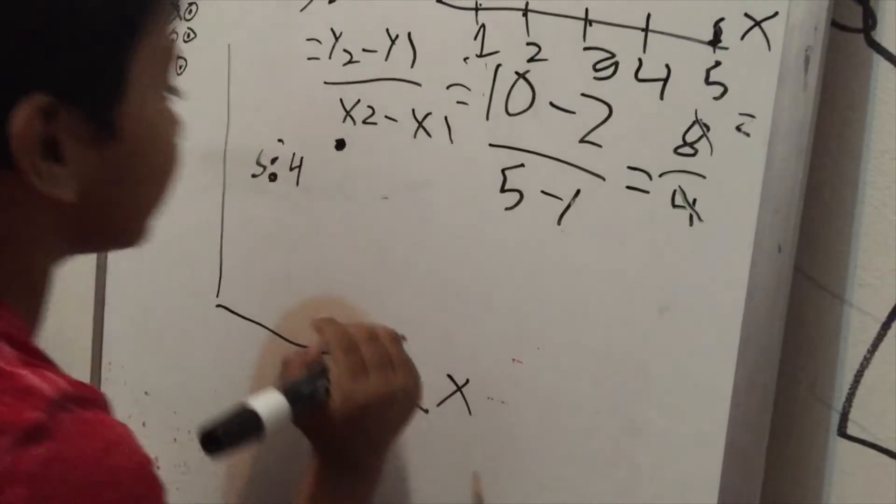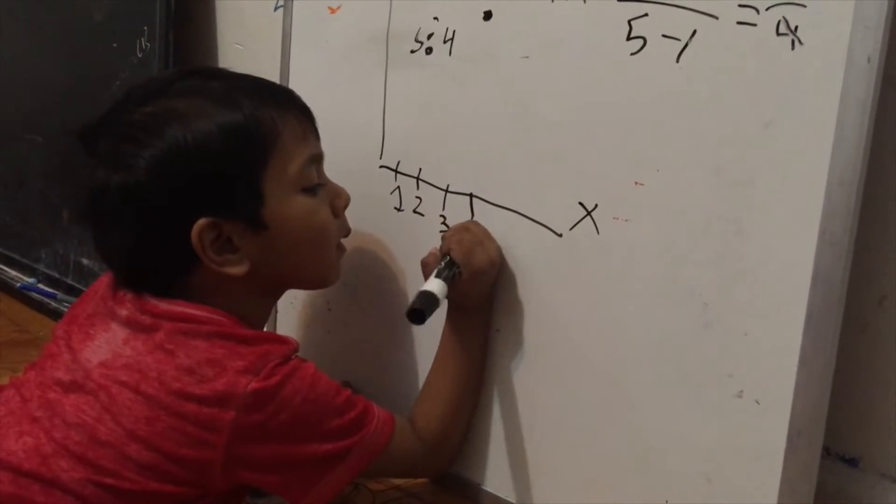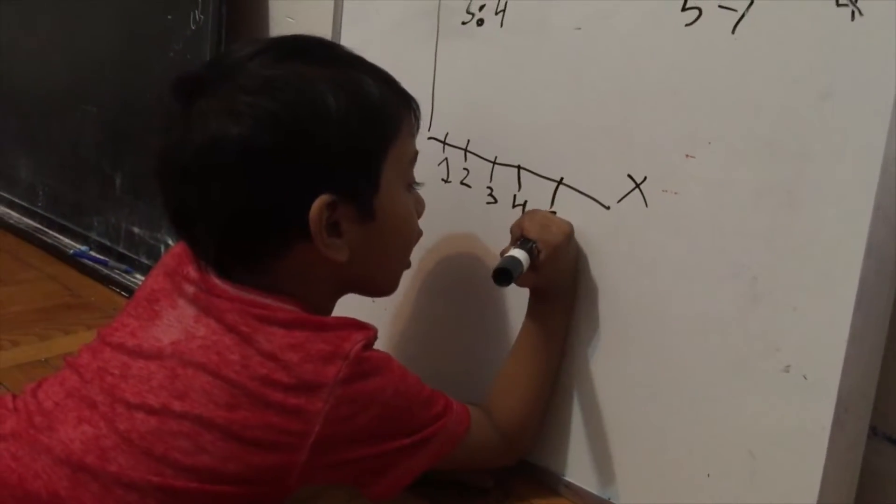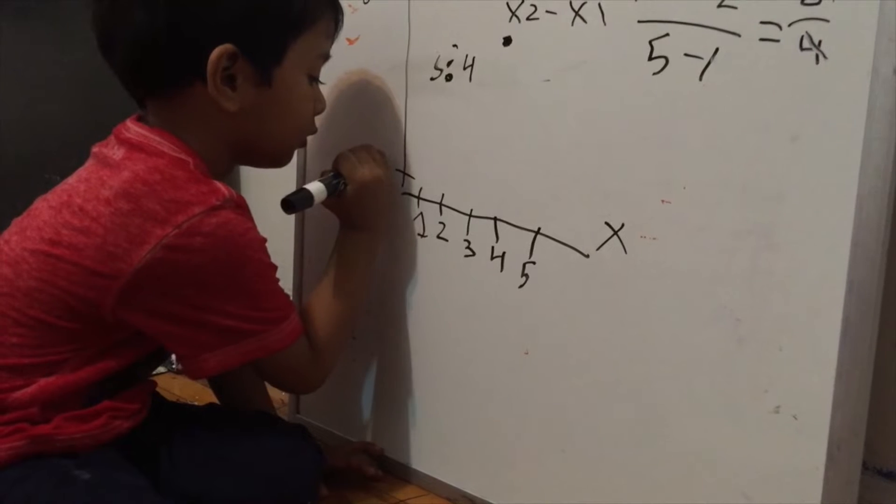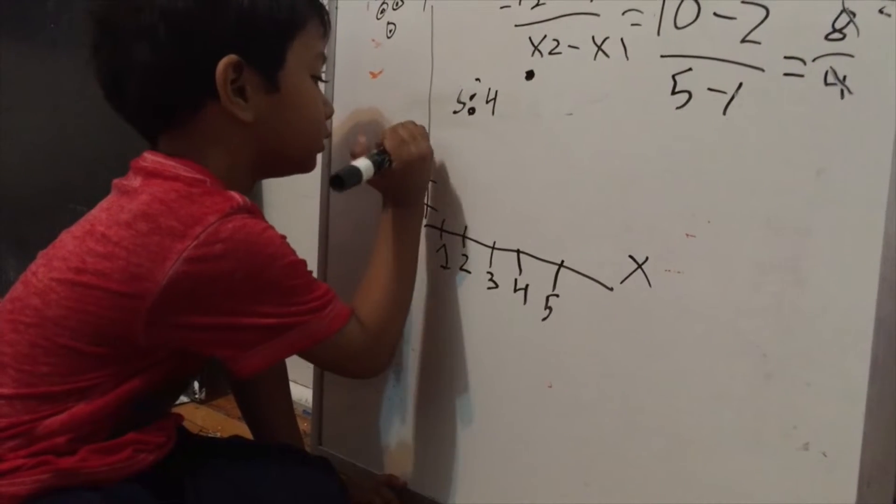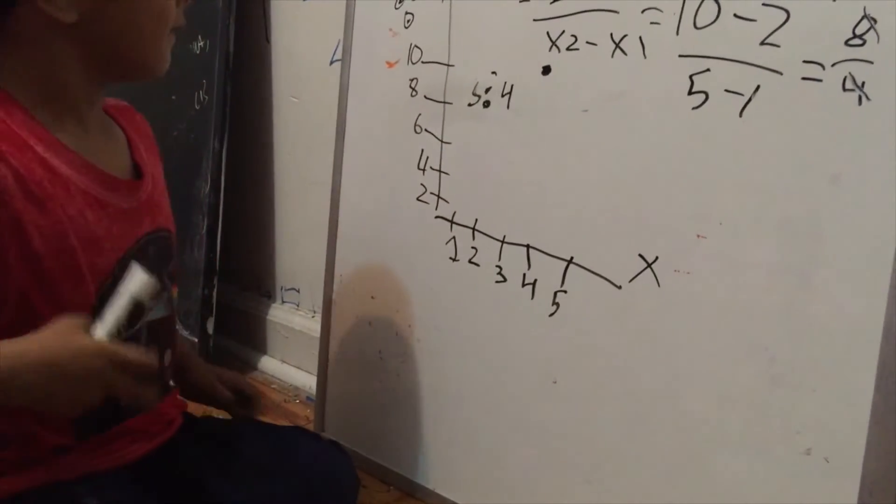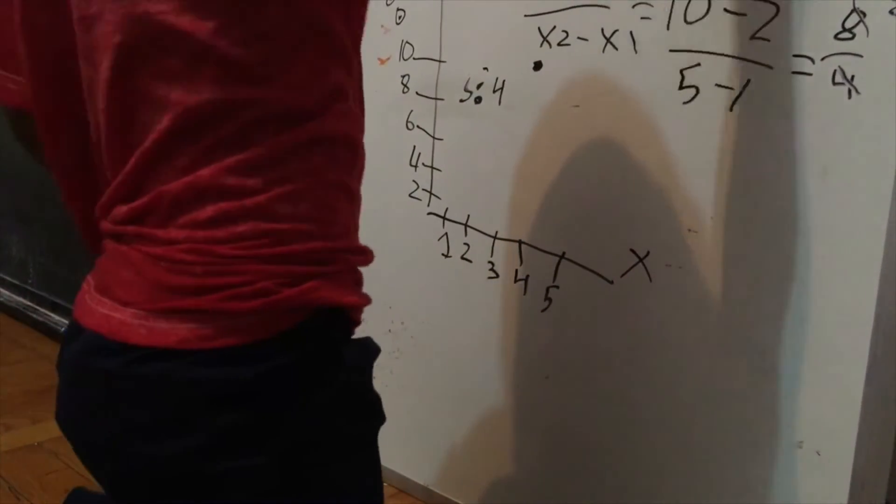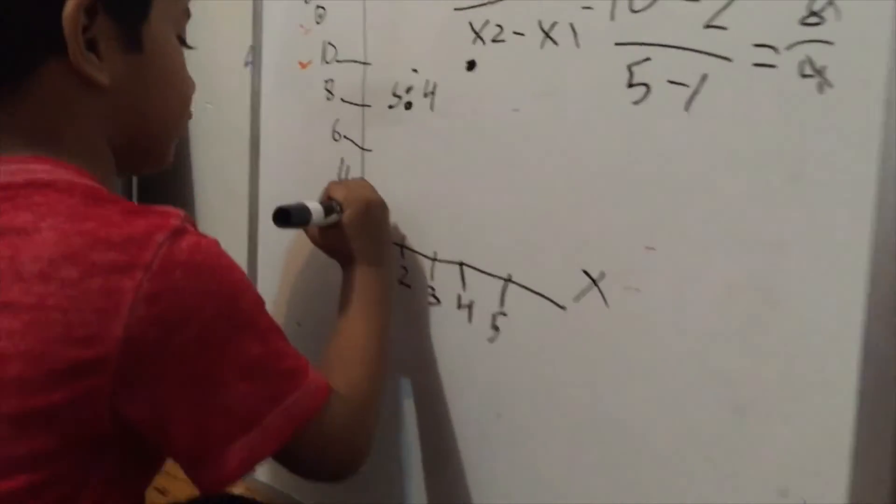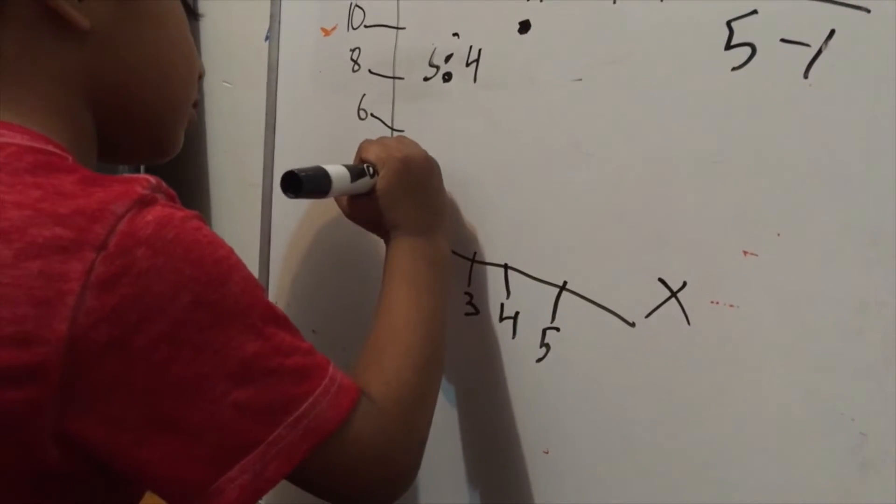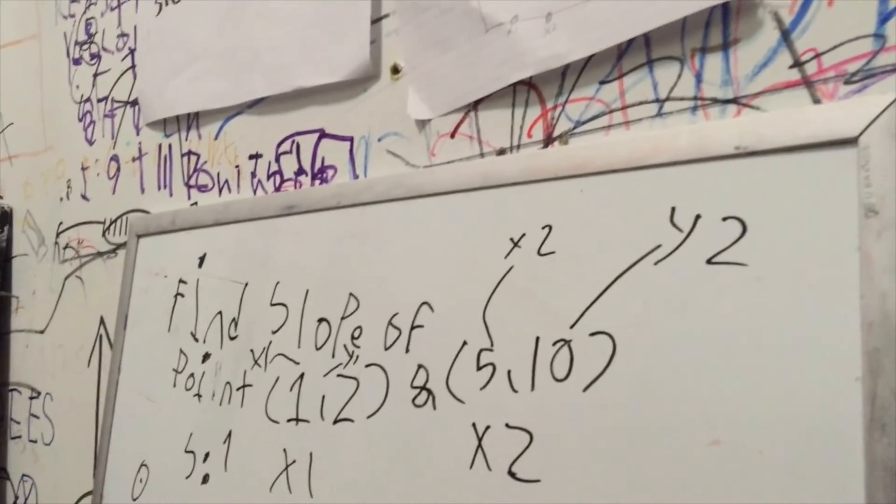X line, and this is called Y line. Now I've got to label the Y: 2, 4, 6, 8, and 10. And Y is 2. Isaac's gonna go 5, 10.